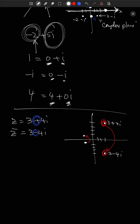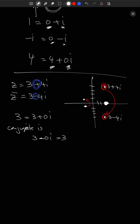This makes sense for real numbers too. If I have the real number 3, that equals 3 plus 0i. Its conjugate is 3 minus 0i, which is still 3. So 3 lives right there, and its complex conjugate is in the same place. That makes sense because if you reflect across the x-axis, anything on the x-axis will stay in the same place. So complex conjugates have a very nice visual representation — they are the original complex number flipped across the x-axis.